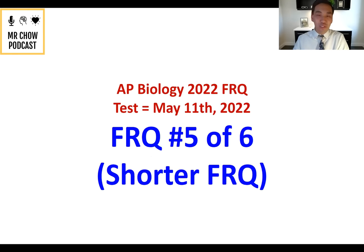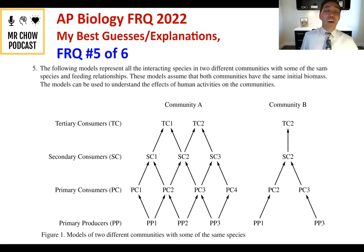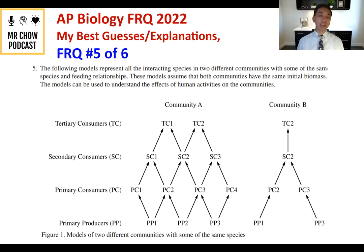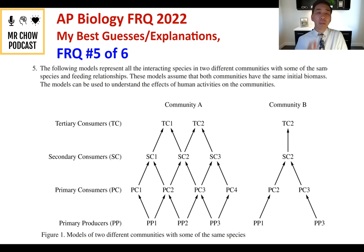FRQ number five. Two models — community A and community B — represent all interacting species in two different communities, with some of the same species in feeding relationships. Both communities have the same initial biomass. Looking at the food webs: community A is way more diverse with multiple producers and consumers, while community B is not. The models help understand effects of human activities on the community.